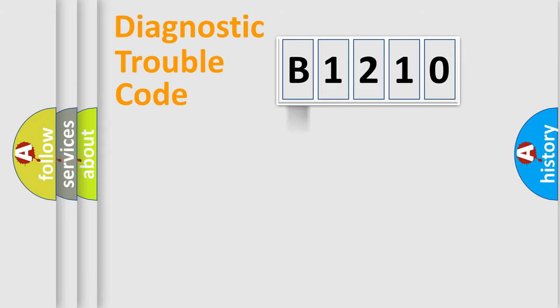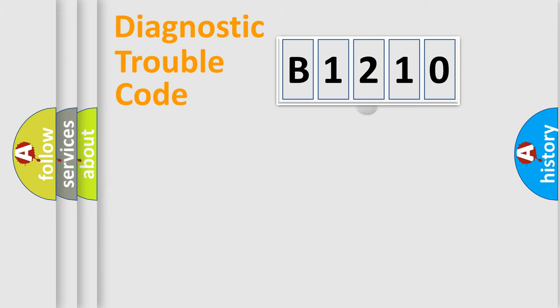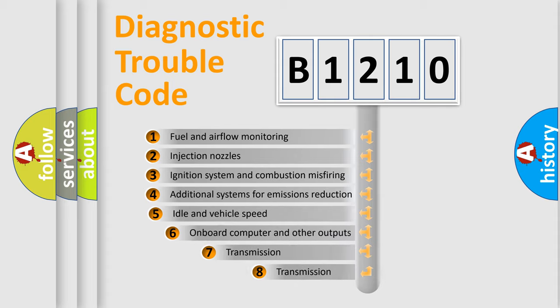Powertrain, Body, Chassis, Network. This distribution is defined in the first character code. If the second character is expressed as zero, it is a standardized error. In the case of numbers 1, 2, 3, it is a manufacturer-specific expression of the car-specific error.